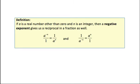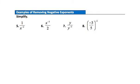Now let's look at the definition of negative exponents in the context of a fraction. If a is a real number other than zero and n is an integer, a negative exponent gives a reciprocal in a fraction as well. A negative exponent in the numerator moves that factor down to the denominator, and vice versa — a negative exponent in the denominator moves that factor up to the numerator.